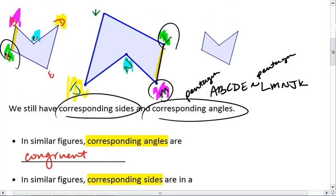Meaning in our figures up here, angle A is congruent to angle L, B is congruent to M, D is congruent to J, and so on.